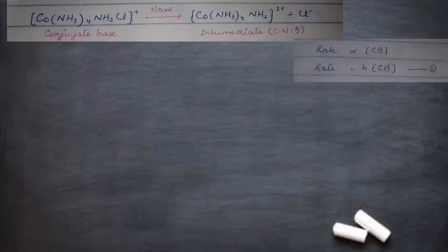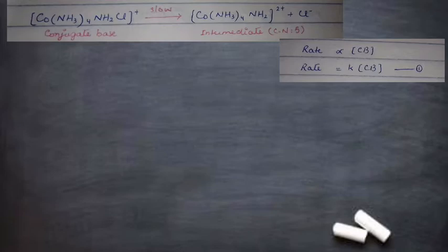Next, we look at the rate of reaction. The rate depends on the slowest step, which is the second step — the rate-determining step. The rate of reaction is directly proportional to the concentration of the conjugate base. Therefore, rate = k × [conjugate base]. This is the first equation.